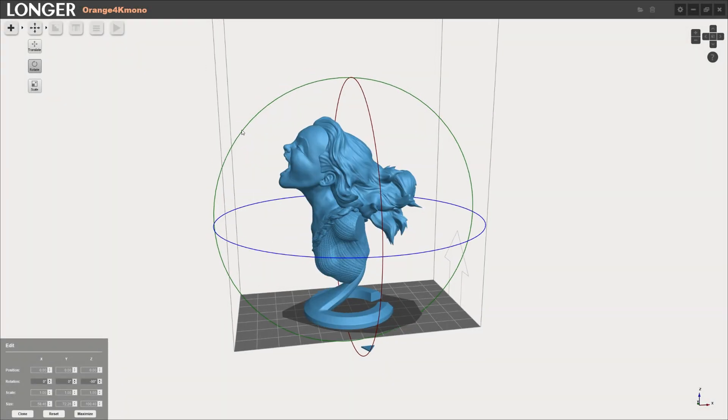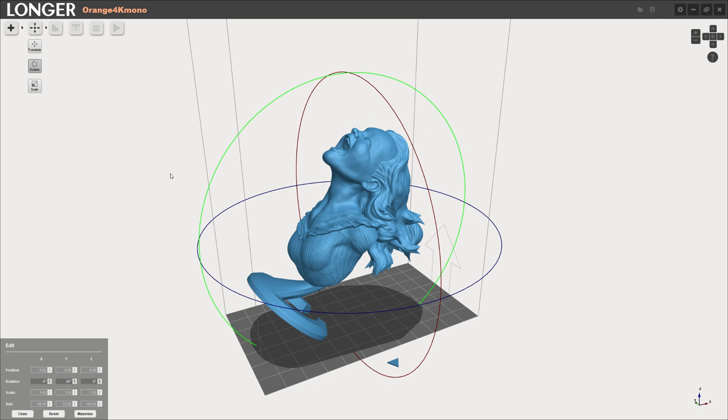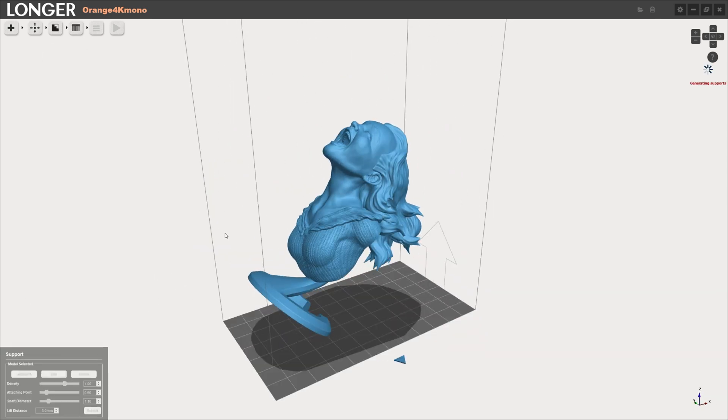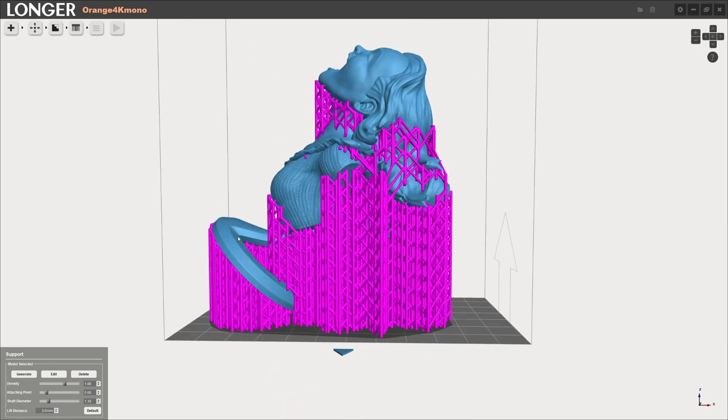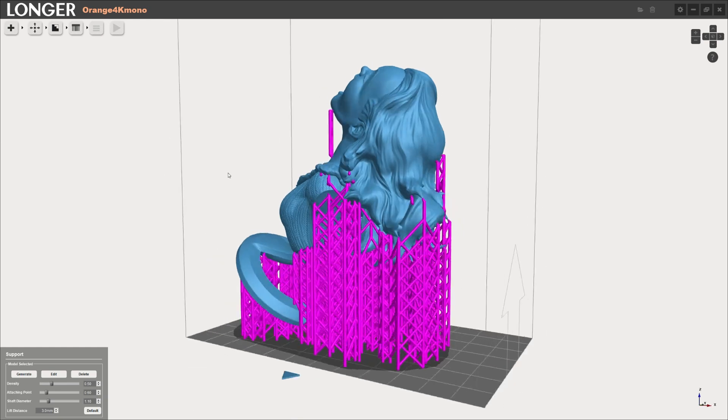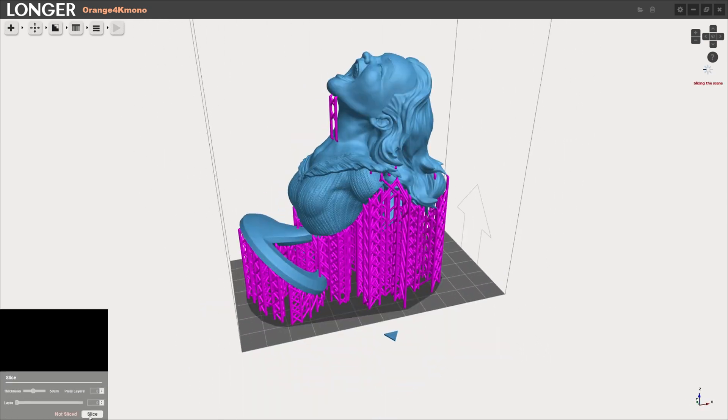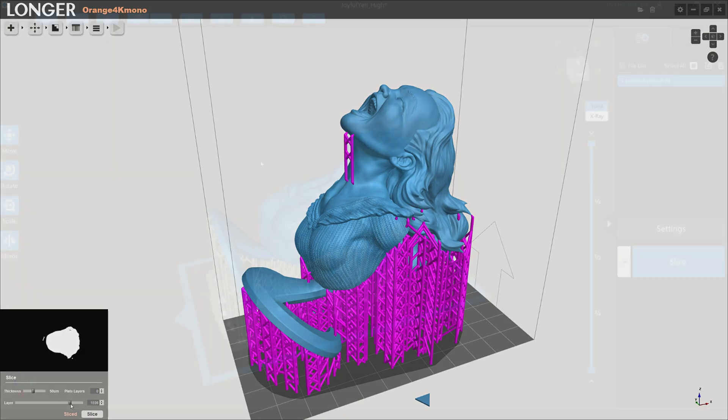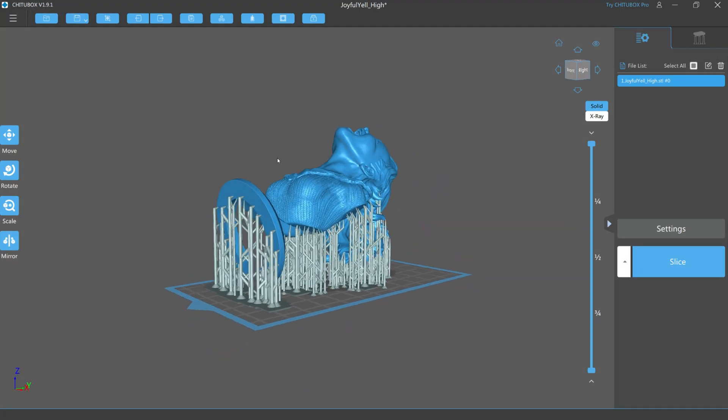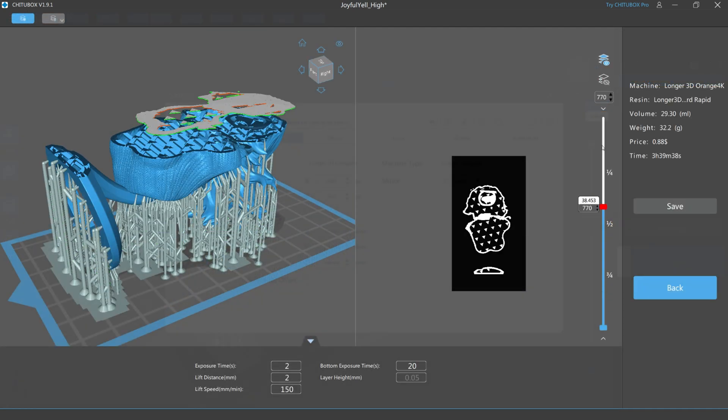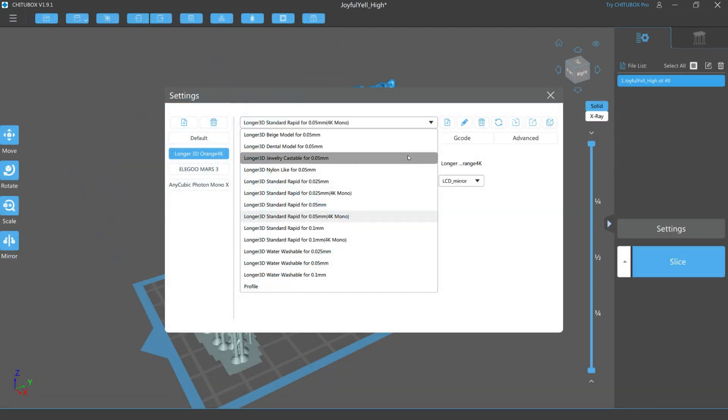Before we can print, we need to slice our models. The Longer Orange 4K has support for three slicers, Chitubox, Lychee, and their own slicer called Longerware. Many resin printers are locked into a single supported slicer, so it's good to see options here. Their own slicer Longerware worked fine, but its support generation options are a little limited. I ended up using Chitubox for most of my prints, since that was the slicer I was the most comfortable with. The included USB drive contained pre-built profiles for a few different resin types and layer heights, and they all worked great.